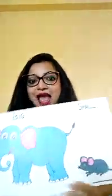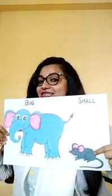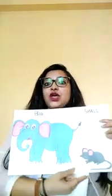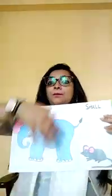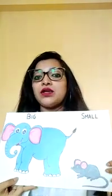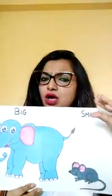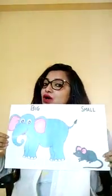Now, all of you close your eyes. Who is coming? Let's see. Haati mamu, haati mamu, chal chal chal. And what is this? A rat. This is an elephant and this is a rat. Elephant is a big animal and the rat is a small animal.